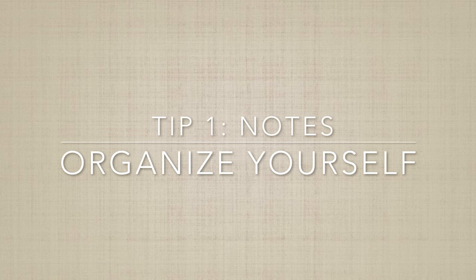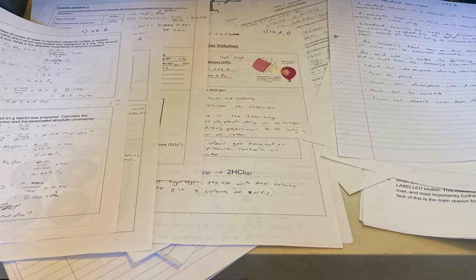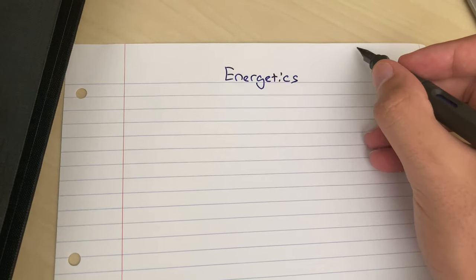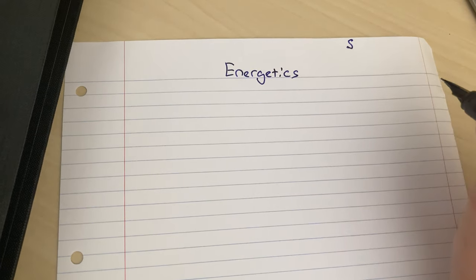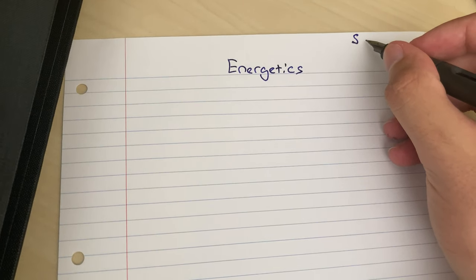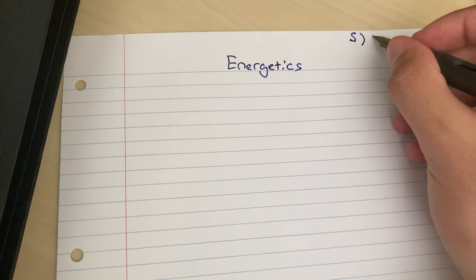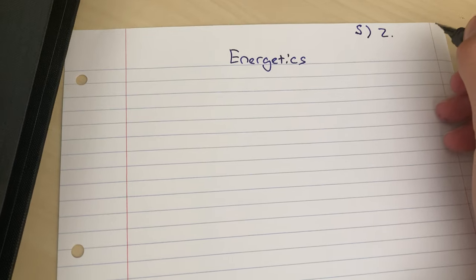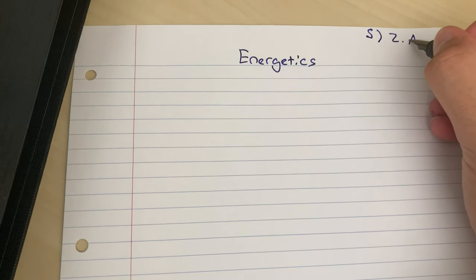Tip number one is about creating chemistry notes — organize yourself. With chemistry there is a large issue concerning class notes where there's a vast amount of information that you have to take notes on and often these can get very disorganized and all over the place. My recommendation is to file these notes in a large binder and number each page at the top right corner with two different numbers. The first one is the topic it belongs to, and the second one is the number of the document you have made. This makes it much easier to use notes for studying in the future.